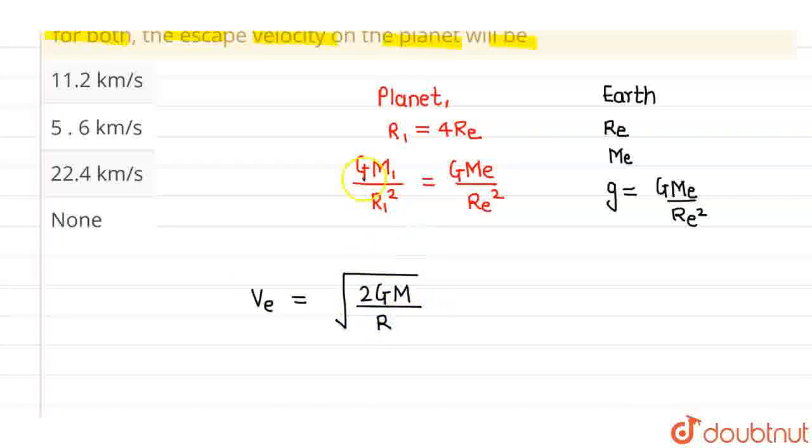Now, since we know that the value of Gm1 by R square is same for both, I will multiply. I am finding this for planet, so this will be Gm1 by R1. I am multiplying and dividing by R1.